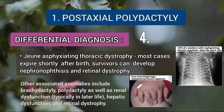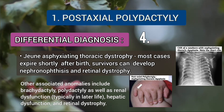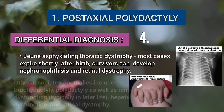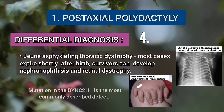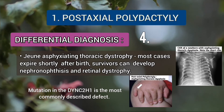Other associated anomalies include brachydactyly, polydactyly, as well as renal and hepatic dysfunction, and retinal dystrophy. Mutation in DYNC2H1 is the most common genetic defect in this syndrome.